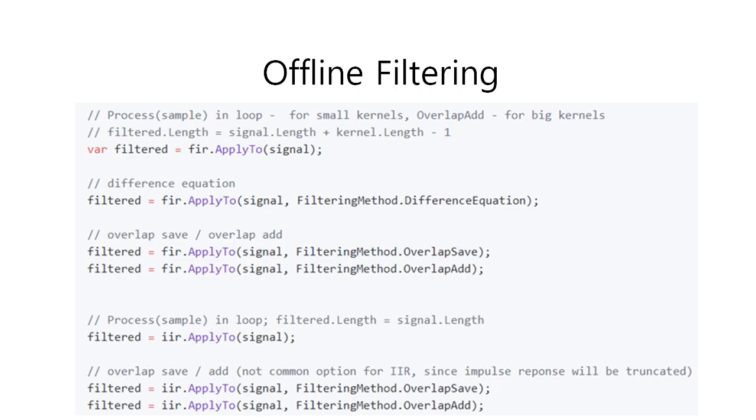Rules are simple. With auto mode, all IIR filters and those FIR filters that have kernel size less than 64 always call process sample in a loop. FIR filters with kernel size starting from 64 samples switch to overlap save mode, because it will be faster.